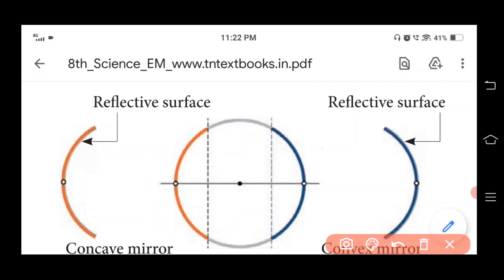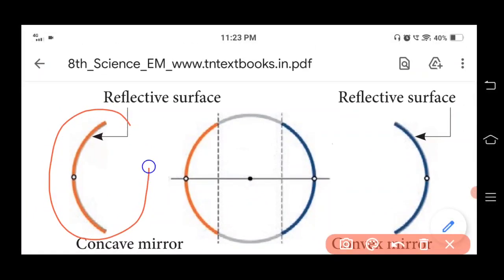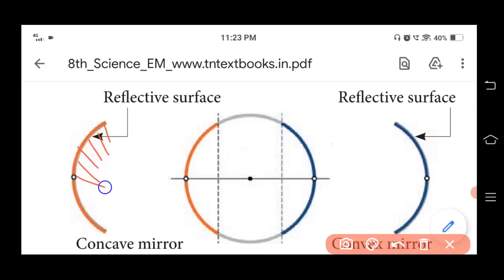A concave mirror is a spherical mirror in which the reflection of light occurs at its concave surface. The light reflects off this concave surface. This mirror magnifies objects placed close to it. The most common example of a concave mirror is the makeup mirror.